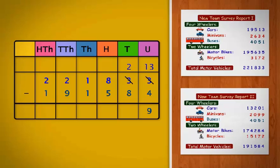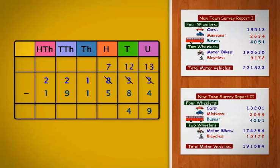Next, we subtract the tens. Since 2 is less than 8, we must borrow from the hundreds. Borrowing 1, 100 leaves 7 in the hundreds column. The borrowed 100 gets regrouped to 10 tens. So, there are now 10 plus 2 equals 12 tens. 12 minus 8 equals 4. Next, we subtract the hundreds. Here, regrouping is not required. 7 minus 5 equals 2.